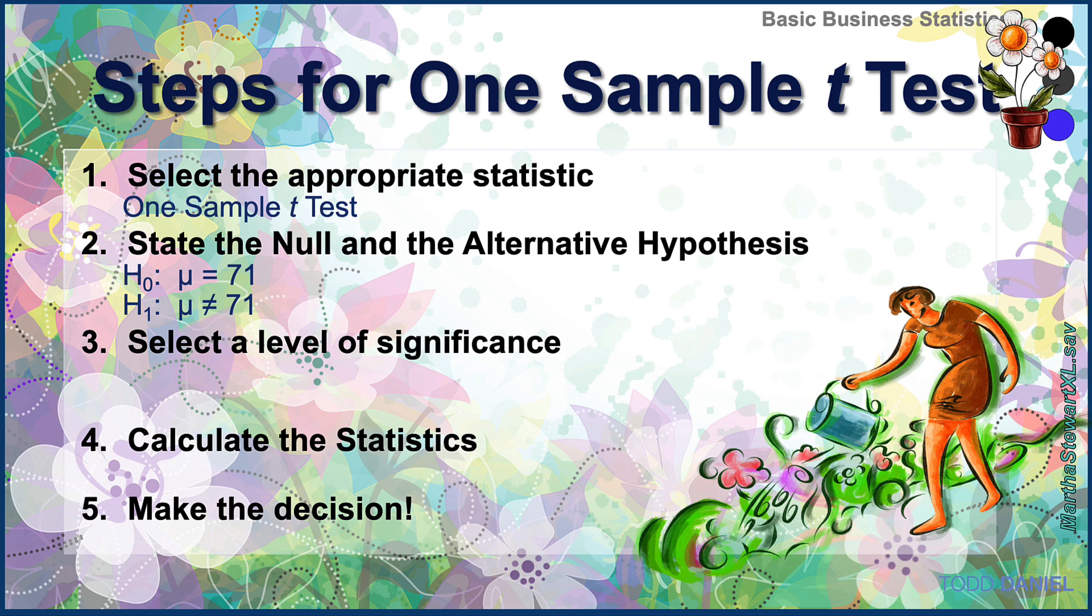The alternative hypothesis is written as H₁: μ ≠ 71. The fact that our null and alternative specify equal and not equal tells us that we are using a two-tailed test. We will use the typical alpha level of 0.05. And our degrees of freedom is the number of participants minus one. With 28 men in our sample, we have 27 degrees of freedom.